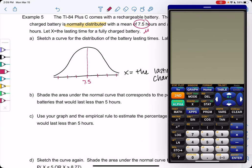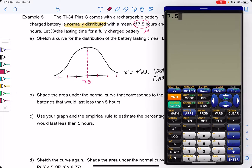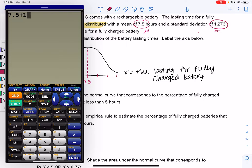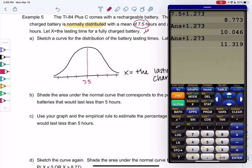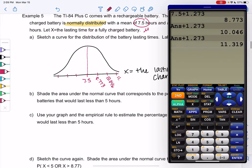I'm going to use the calculator since the numbers are a little ugly in this example. We'll take the mean of 7.5 and we'll add the standard deviation 1.273, and then we'll add 1.273, and then we'll add 1.273 for 3 times. So that means on the left side as we add standard deviations, the first standard deviation is 8.773, the second is 10.046, and the final third standard deviation is 11.319.